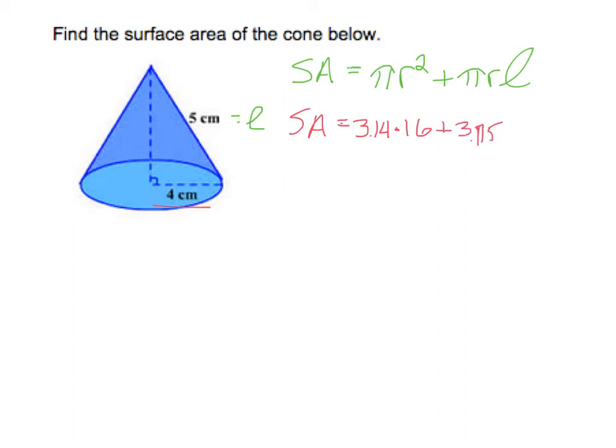That's a 1. Why did I put a 5? 3.14 times the radius times the height. So now, just like with cylinders, we want to do these separately because of order of operations.